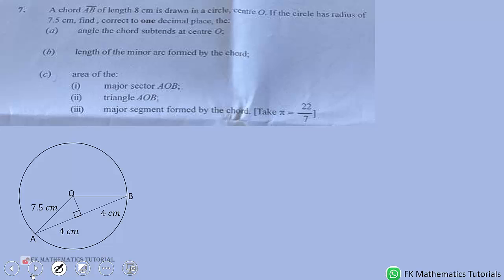We have the circle here. The chord is AB, as you are seeing, 8 centimeters. In the center, we drop a line from the center to the chord AB. When it happens like that, it will divide the chord into 2 equal parts because that line meets the chord at 90 degrees. Anytime it meets at 90 degrees, it divides it into 2 equal parts. That's why you are seeing 4 here, 4 here, giving us 8, and the radius is 7.5 centimeters.